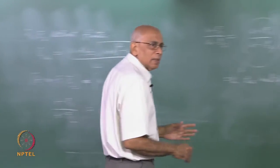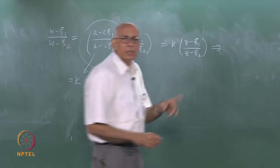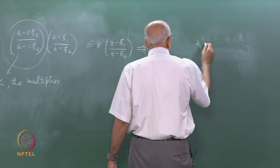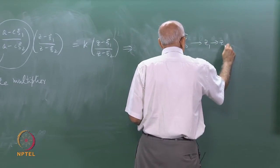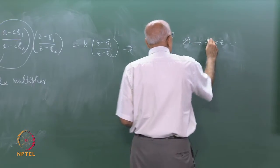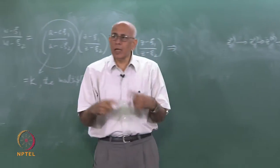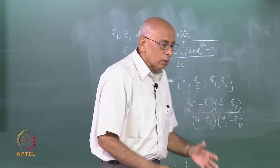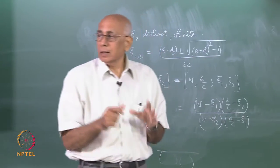This immediately implies something much more interesting: if you do this transformation over and over again. Suppose you start with z-naught and apply the Möbius transformation to get z1, z2, and so on. Each time you repeat the same Möbius transformation — you iterate it — let the original variable be z superscript zero and after n iterations, z superscript n.